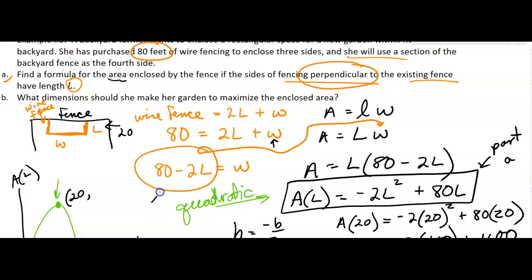What dimension should she make her garden to maximize the enclosed area? The part here should be 20, and then now how much is that going to be, what's the W going to be? You'll have to plug it in here, so you're going to get 80 minus 2 times 20 for the W, so that's going to be 40.